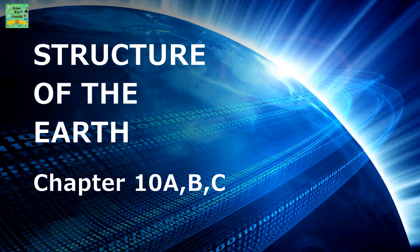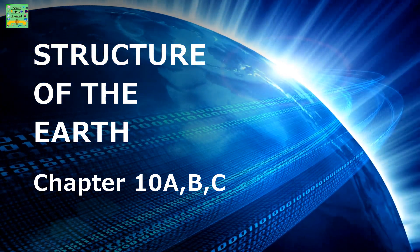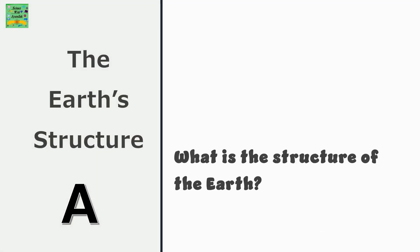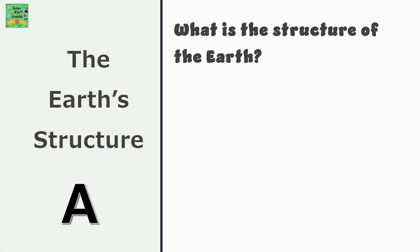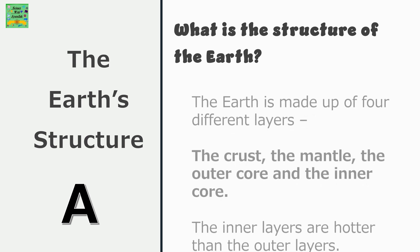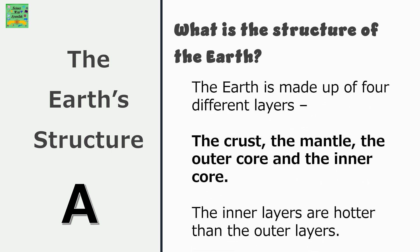The structure of the Earth. What is the structure of the earth? The earth is made up of four different layers: the crust, the mantle, the outer core, and the inner core. The inner layers are hotter than the outer layers.